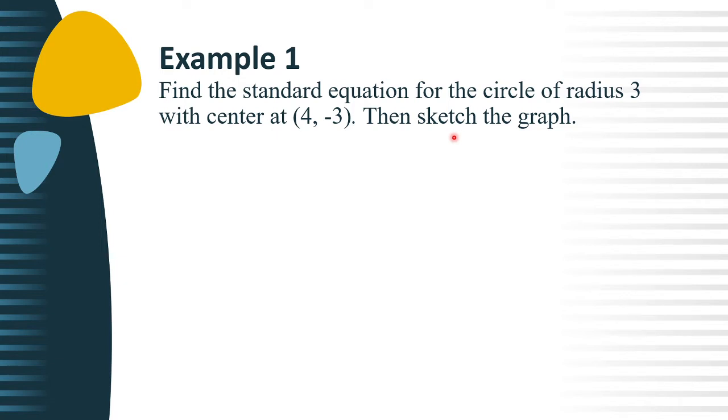Since the circle has its center at (h, k), we use the equation (x - h)² + (y - k)² = r². From the given problem, we identify the values of h, k, and r as 4, -3, and 3 respectively.